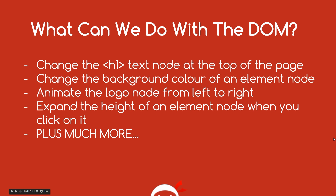So what can we do with the DOM? Well, we can change these nodes, we can interact with them. A few examples: we could change the text node within a h1 tag, we could change the background color of an element node, we could animate a logo node from the left to the right - that's going to be an image node - animate it from the left side of the document to the right side. We could expand the height of an element node when you click it. For example, you might have a bit of text, then a read more link below - if you click that link, it expands the height of that element node so you can read more. Plus we can do tons of other things with the DOM: animations, validations, tons of other cool stuff, and we're going to go into a bit of that later on.